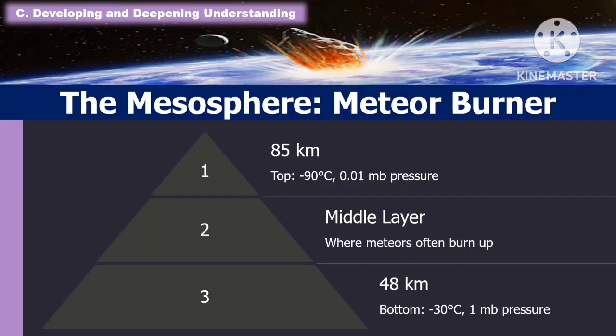Another layer of the atmosphere is the mesosphere, known as the meteor burner. It extends from 48 kilometers to 85 kilometers. At the bottom, temperature is negative 30 degrees Celsius with 1 MB pressure. At the top, temperature is negative 90 degrees Celsius with 0.01 MB pressure. It is the middle layer where meteors often burn up.